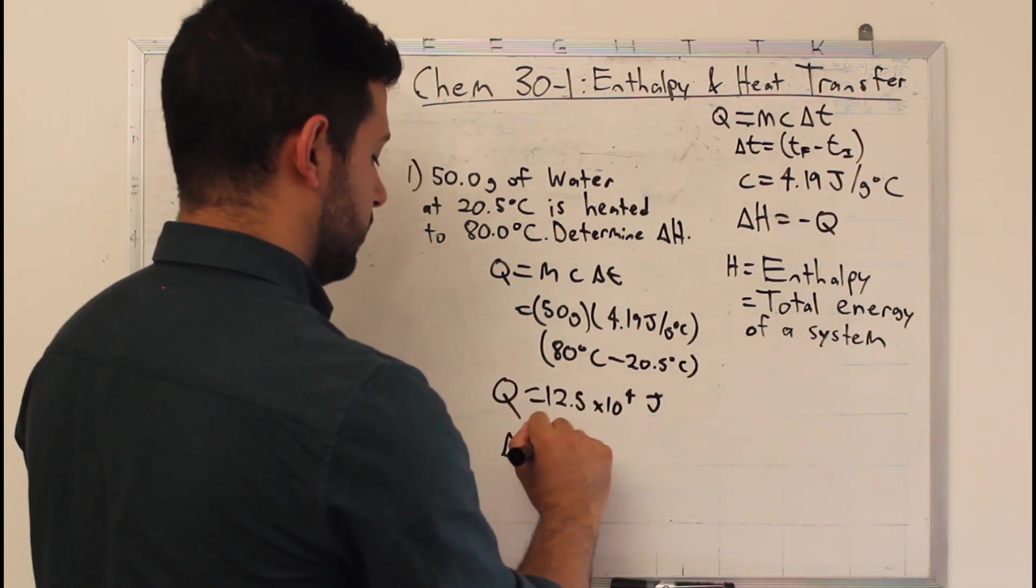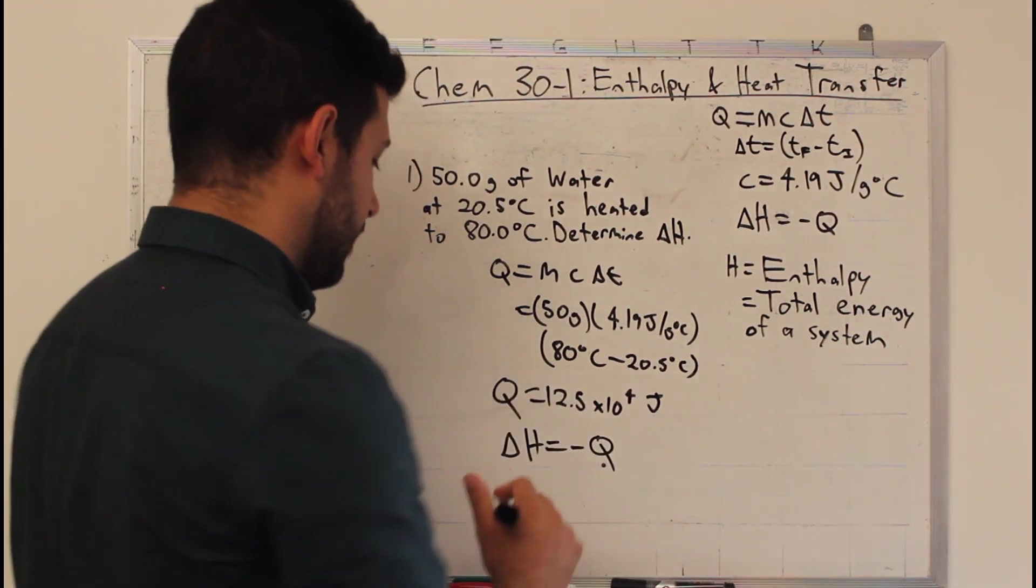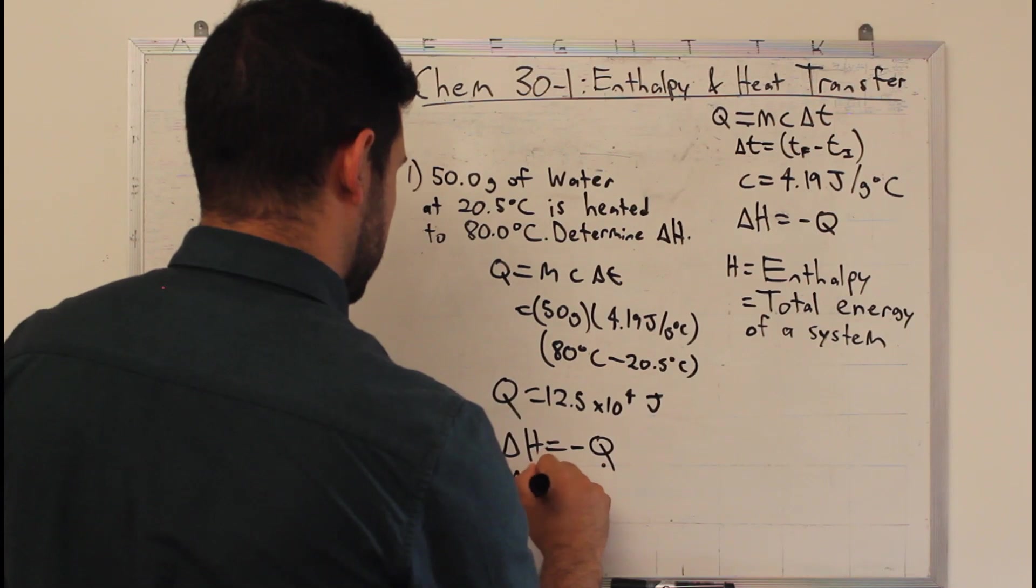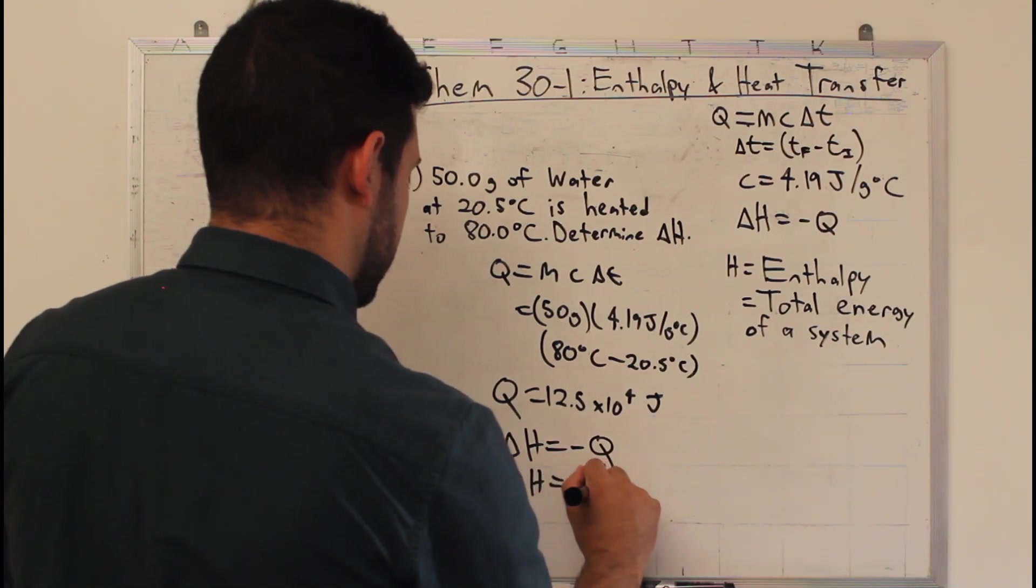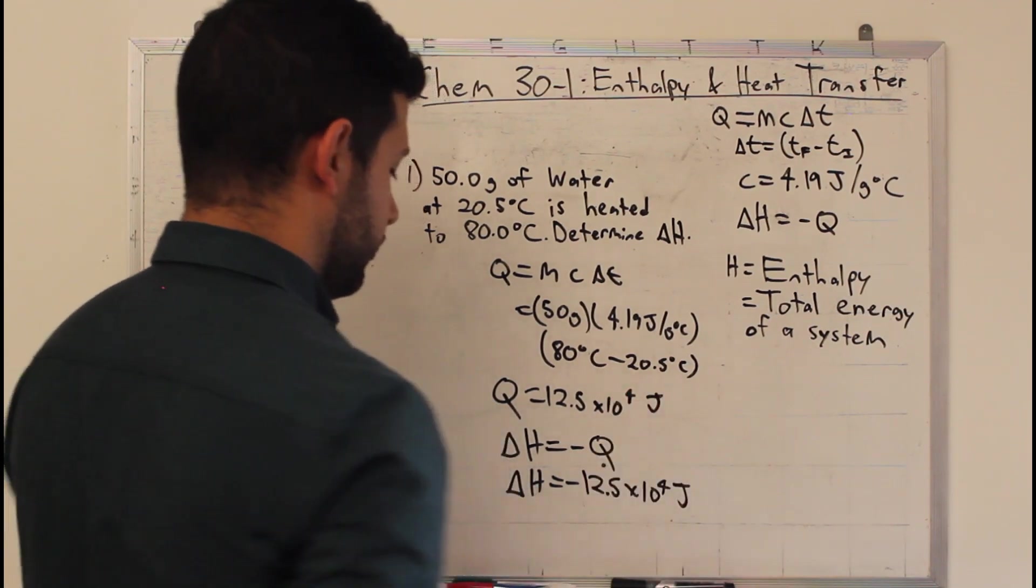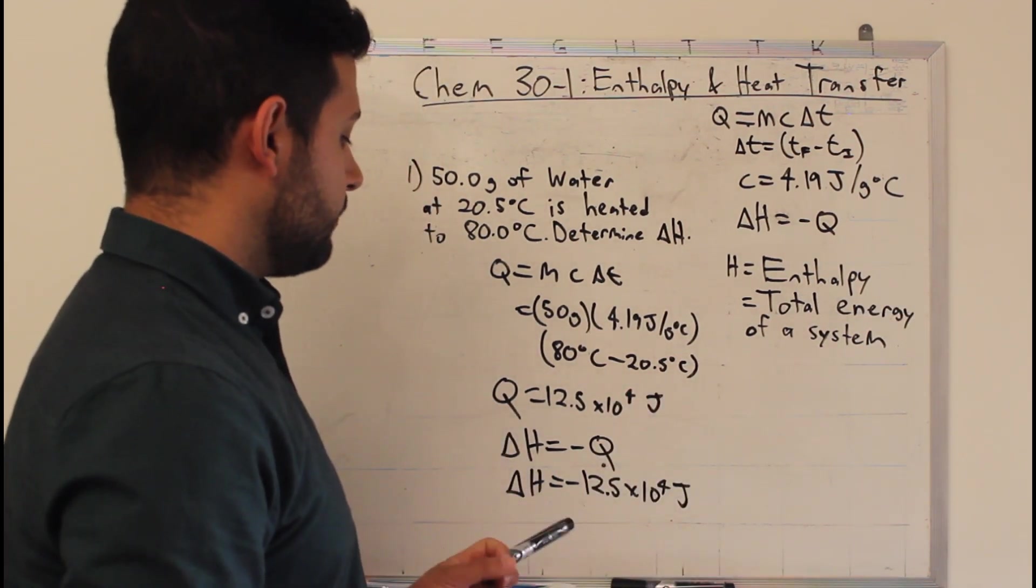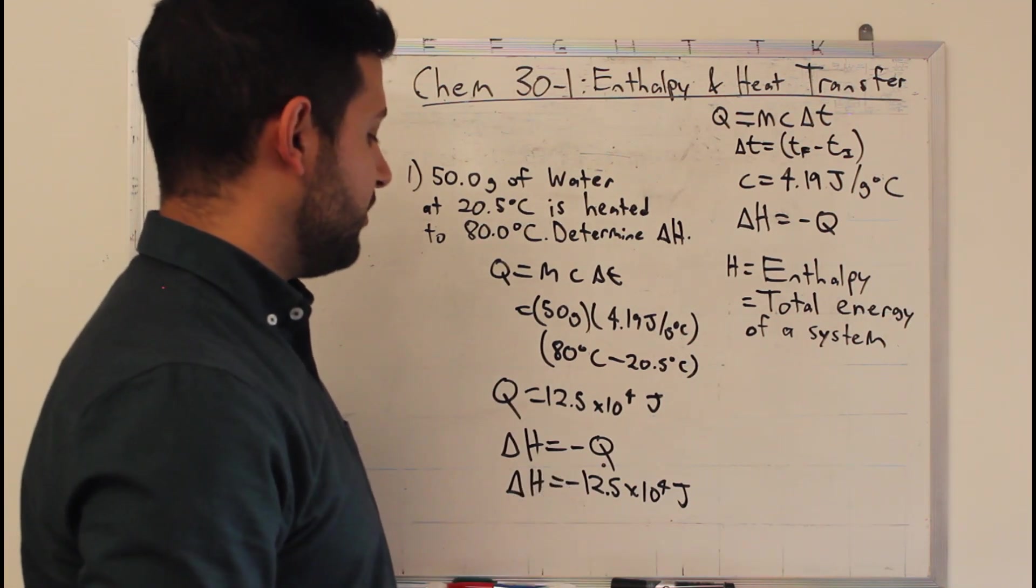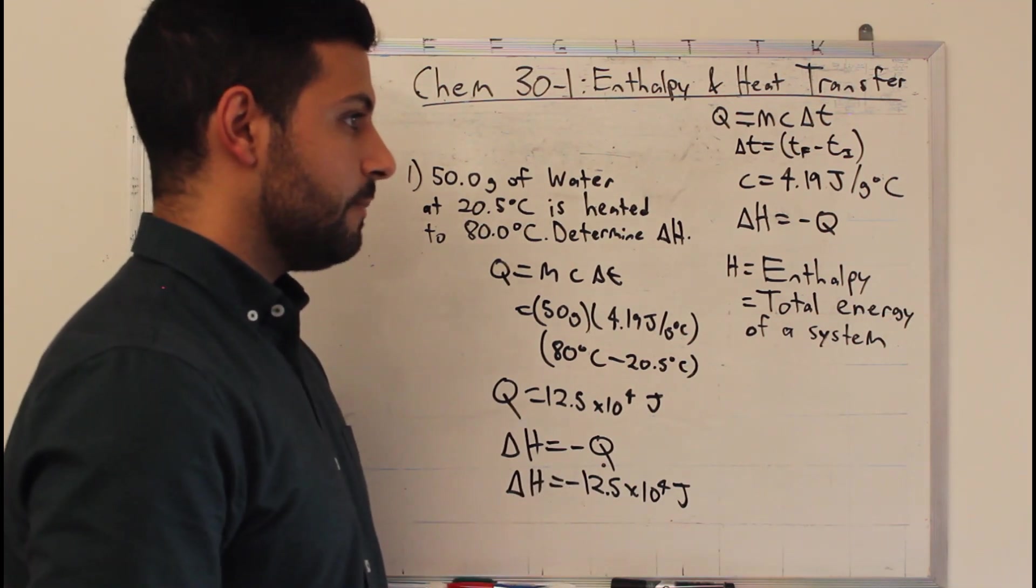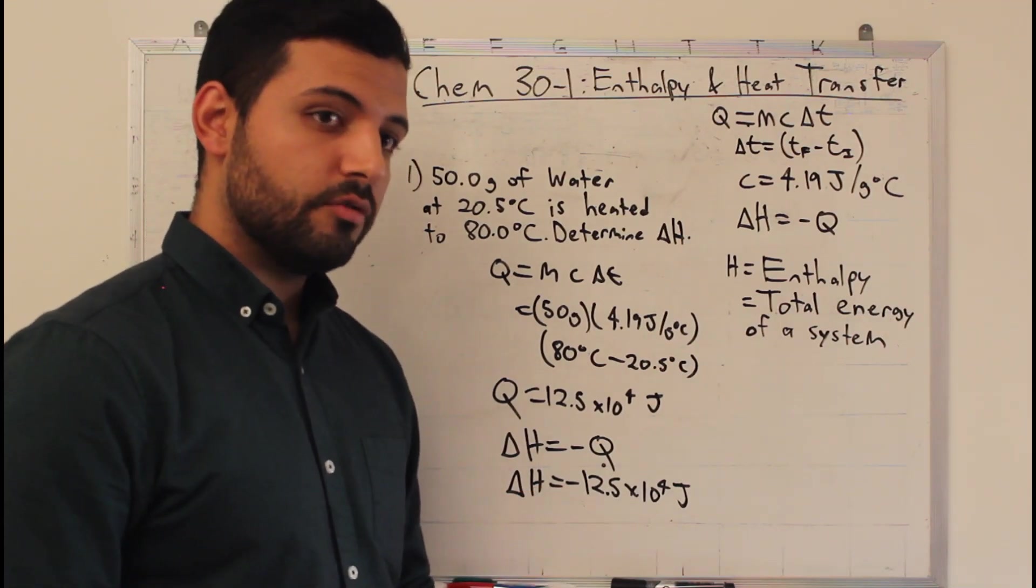Now, if delta H equals negative Q, we simply stick a negative sign over top of that. And we get delta H is negative 12.5 times 10 to the 4 joules. Which means the change in energy is 12.5 times 10 to the 4. Or that is to say, the energy system lost 12.5 times 10 to the 4 joules.